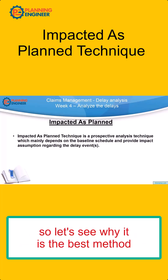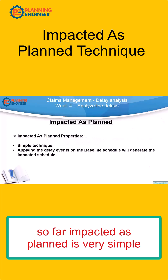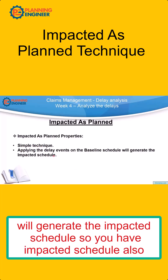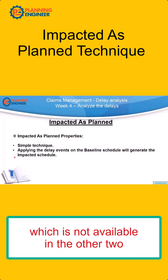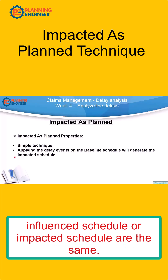Impacted as Planned is a very simple technique. You apply the delay events on the baseline schedule and this will generate the impacted schedule — which is not available in the other two methods. The impacted schedule and the influenced schedule refer to the same thing.